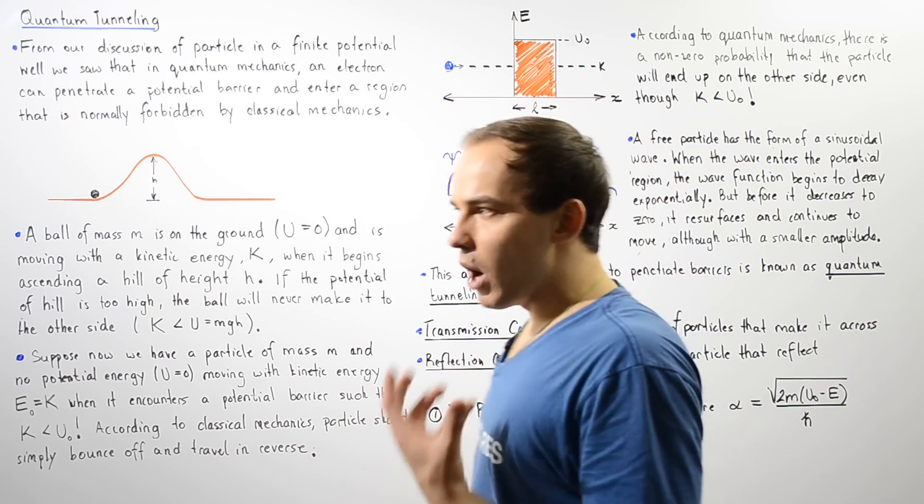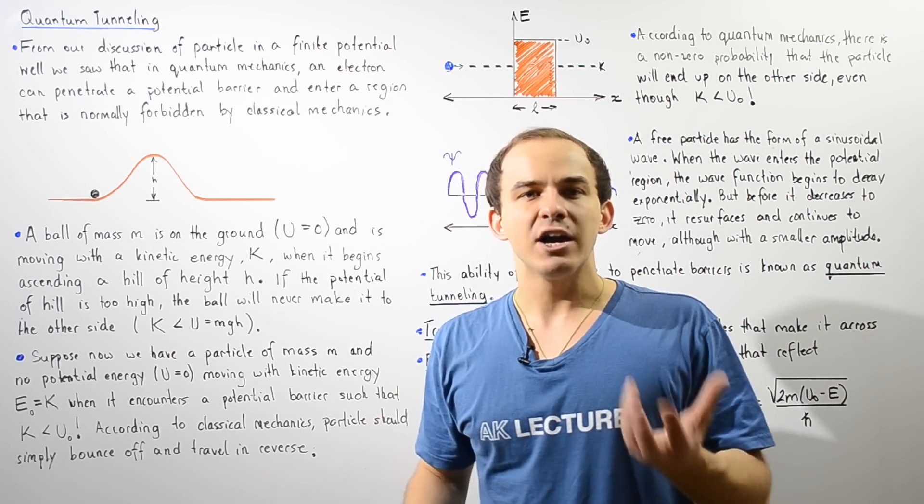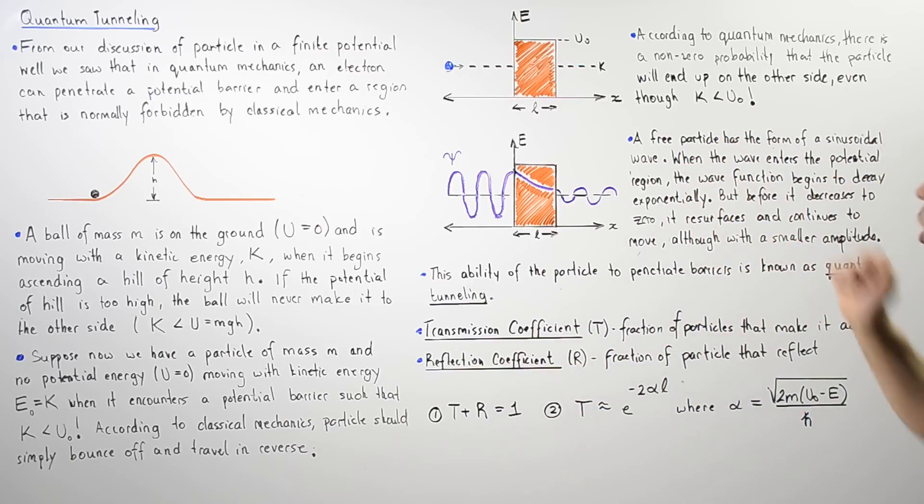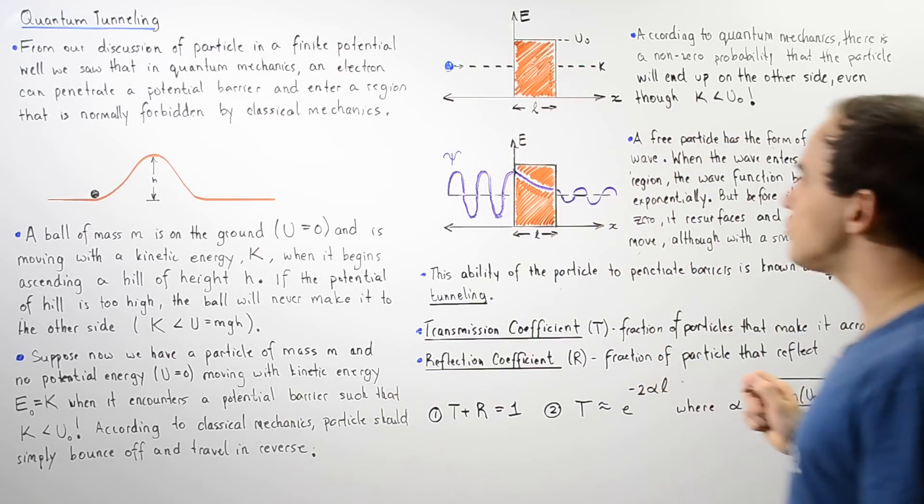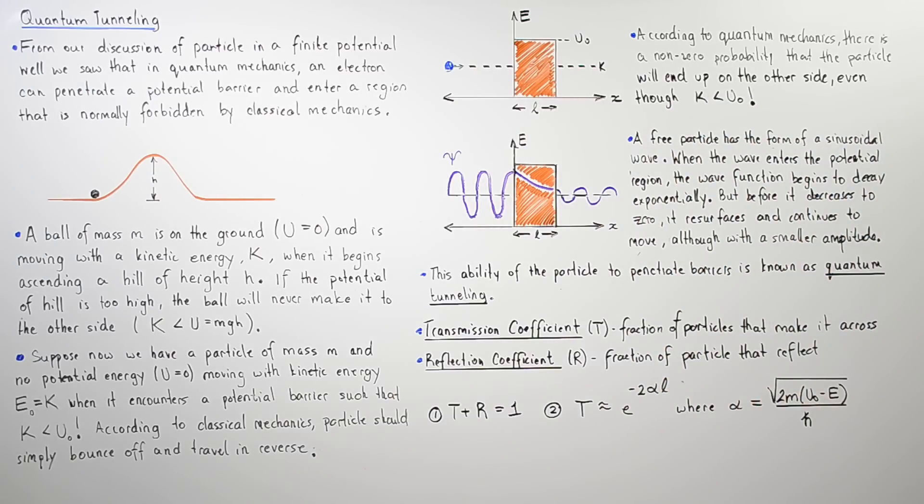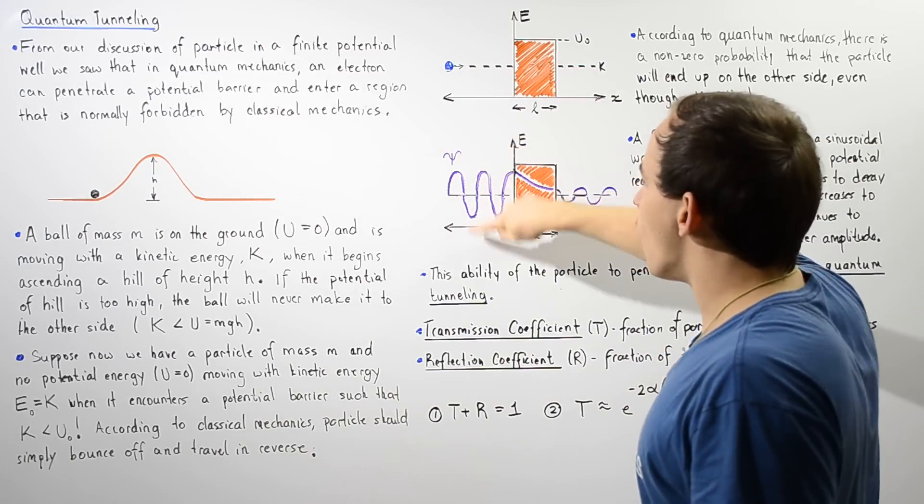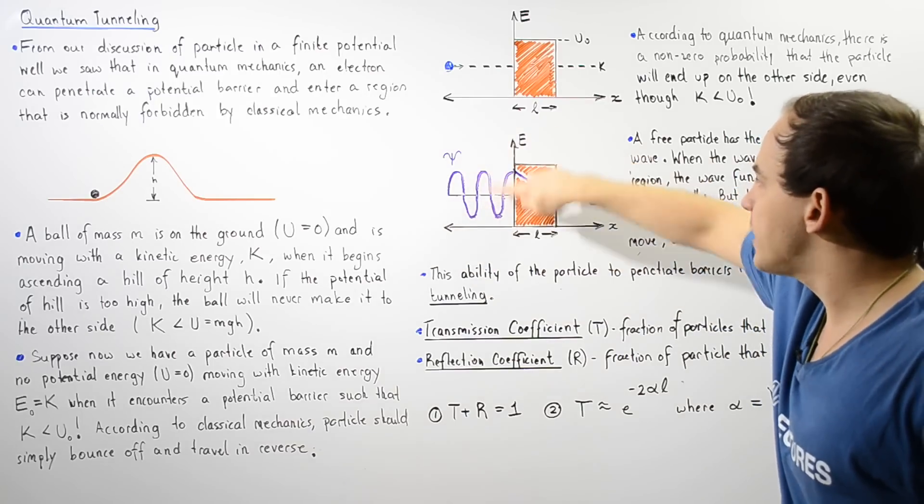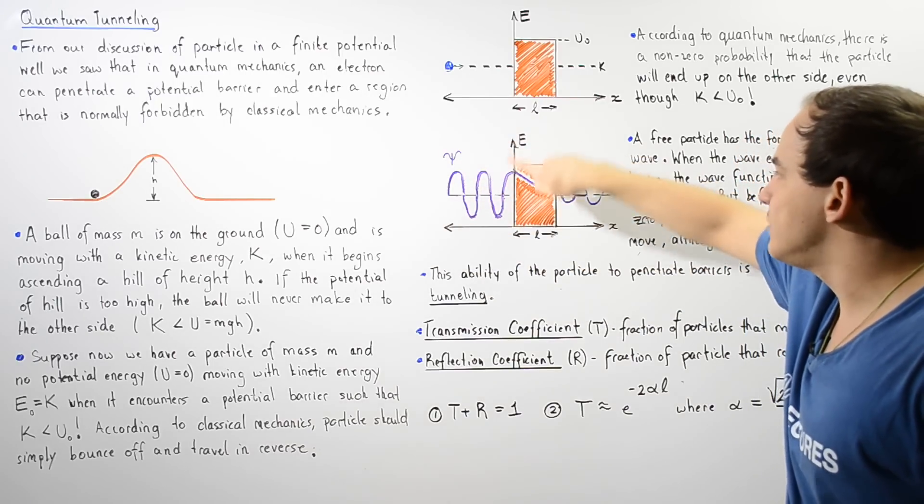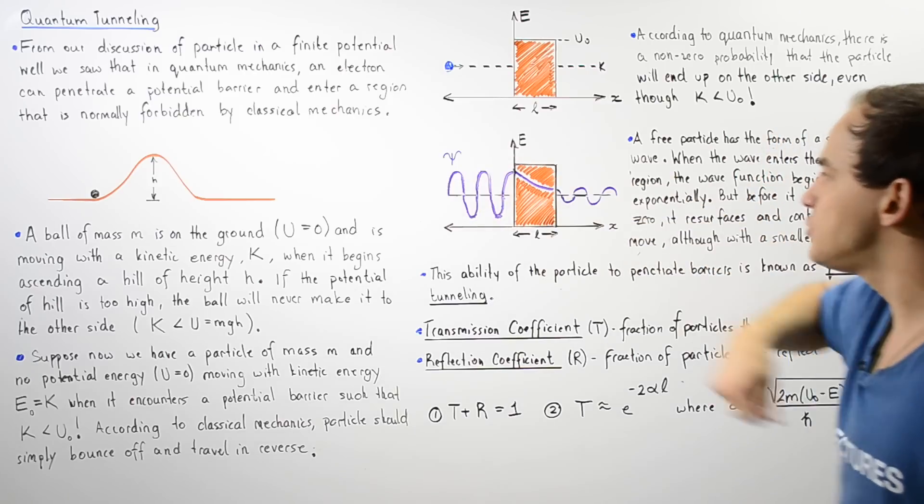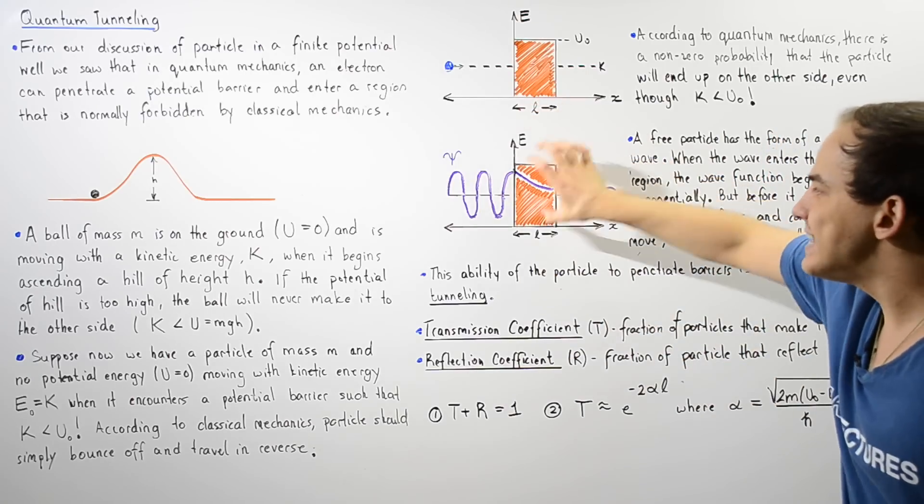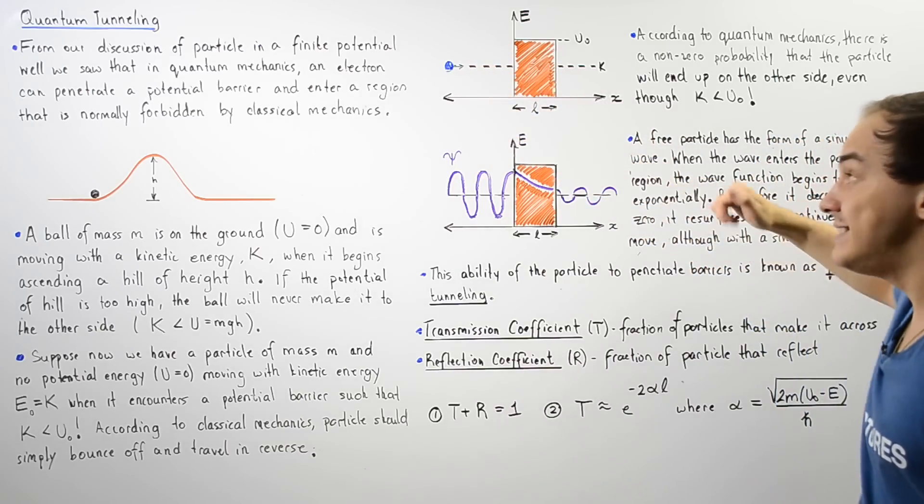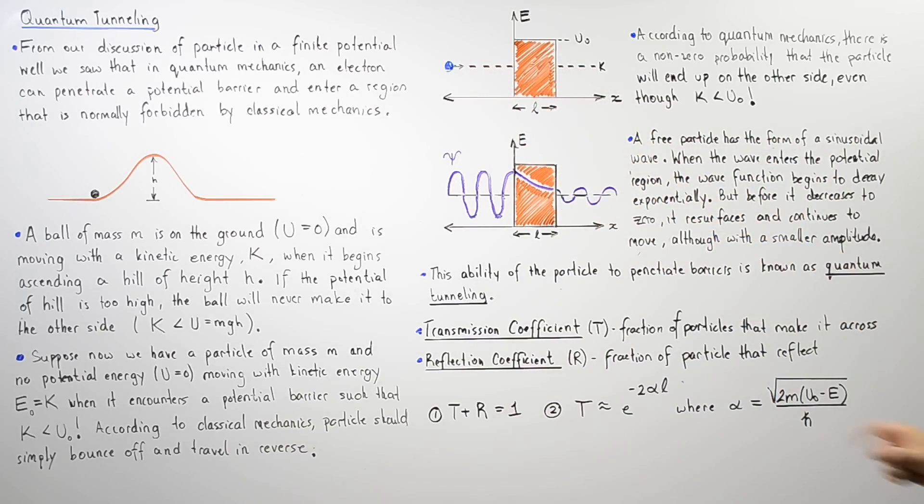So remember, any particle in quantum mechanics is described by a wave function given by ψ. Now a free particle such as this electron can be described by a wave function that takes the form of a sinusoidal wave. So our electron creates this wave, which basically travels. It has a certain amplitude. And when it enters this region, it begins to decay, decrease exponentially.